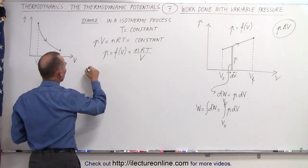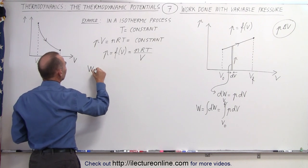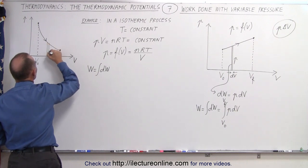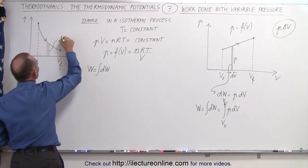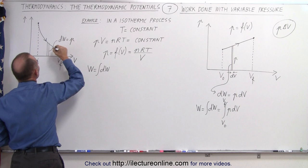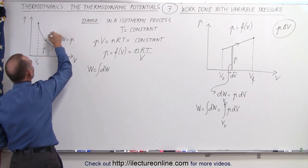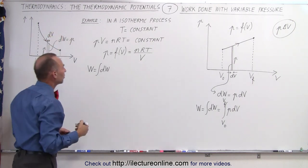So we can then say that the amount of work done is equal to the integral of all the dws. Again, we're going to take a small little slice. This is going to be a dw, which is equal to the pressure at that point in the volume change times the width, which is a dV. So the width from there to there of that little slice is the dV.